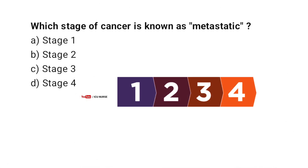Which stage of cancer is known as metastatic? A. Stage 1. B. Stage 2. C. Stage 3. D. Stage 4. Correct answer: D. Stage 4.